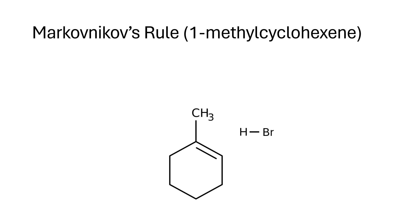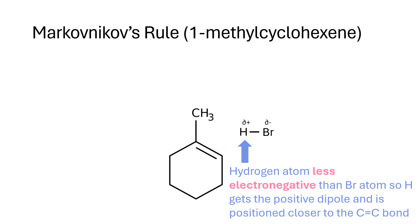So let's take our hydrogen halide, HBr. Don't forget that the hydrogen atom is less electronegative than bromine, so hydrogen gets the positive dipole and is positioned closer to the carbon-carbon double bond, not the other way around.